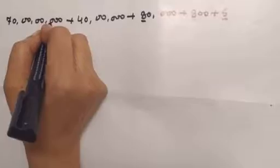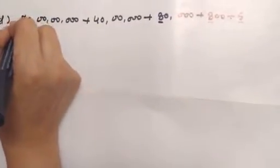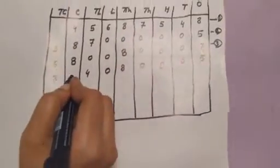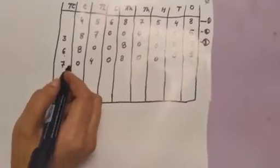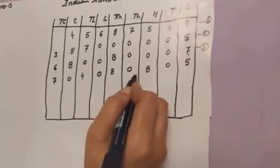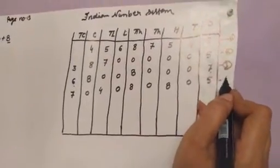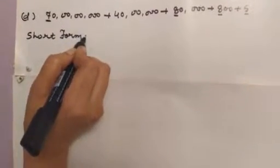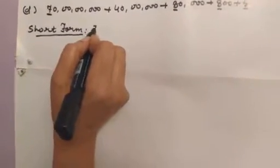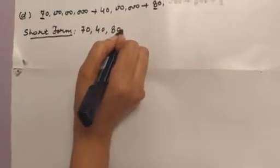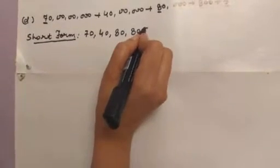Ones, hundreds, thousand, ten thousand, lakh, ten lakh, crore, ten crore — write seven in ten crore and zero in crore. So the short form is seventy crore, forty lakh, eighty thousand, eight hundred five.